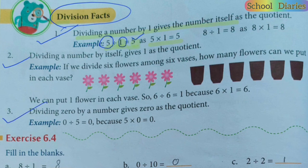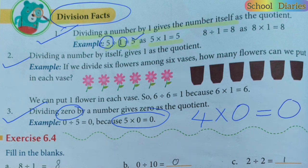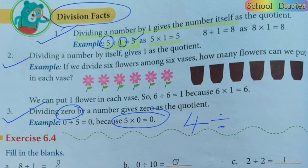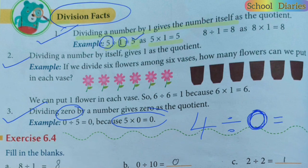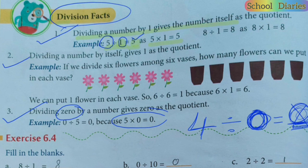Now let's see Fact Number Three. If you divide zero by any number, the answer will be zero. This means if there were zero chocolates and you have to distribute them among children, no one gets anything — the answer is zero. So this is why the answer is zero.